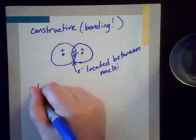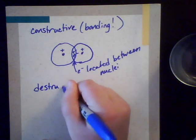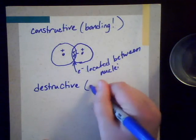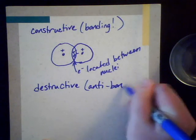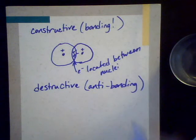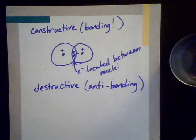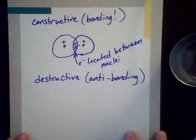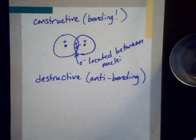If these orbitals interact destructively, then we call these anti-bonding — because it's not a favorable position energetically speaking. At this general chemistry level, we're just going to talk about this in terms of qualitative ideas, and just as a model for how and why covalent bonds occur.